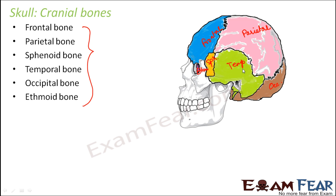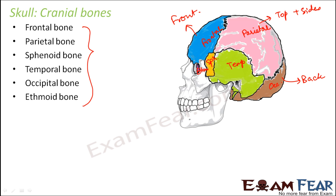The temporal bone forms the portion of the skull behind the ears. The occipital bone forms the back of the skull. The ethmoid bone forms the floor of the skull and is present at the center, just behind the nose. So temporal bone is present behind the ears and ethmoid bone is present behind the nose.